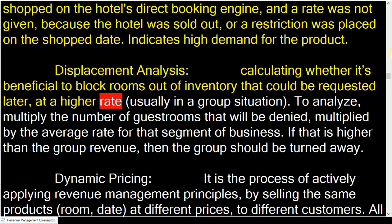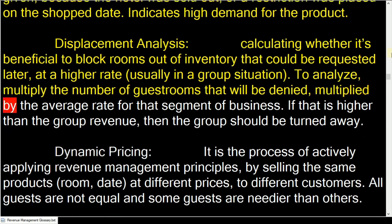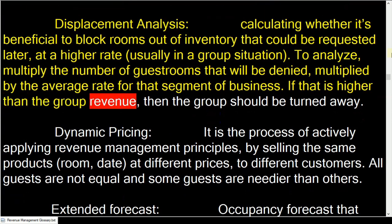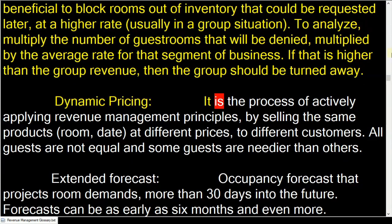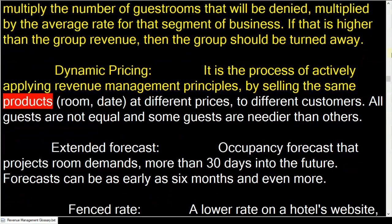Displacement analysis: calculating whether it's beneficial to block rooms out of inventory that could be requested later at a higher rate. To analyze, multiply the number of guest rooms that will be denied by the average rate for that segment of business. If that is higher than the group revenue, then the group should be turned away.